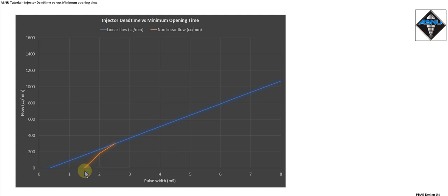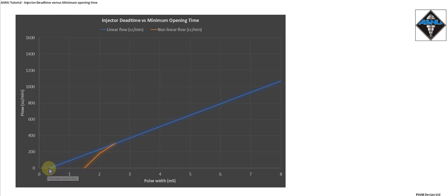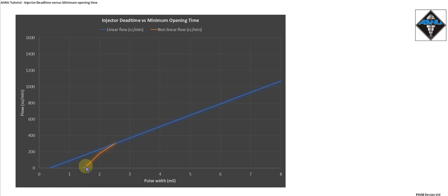This point is the real minimum opening time of the injector, so nothing really happens below this point, and it's easy to get confused between this point and dead time. If you were to run an injector on an ASNU machine and you gradually increase the pulse width until you saw some spray, this is the point you would see — it's the minimum opening time, but it's not the dead time.